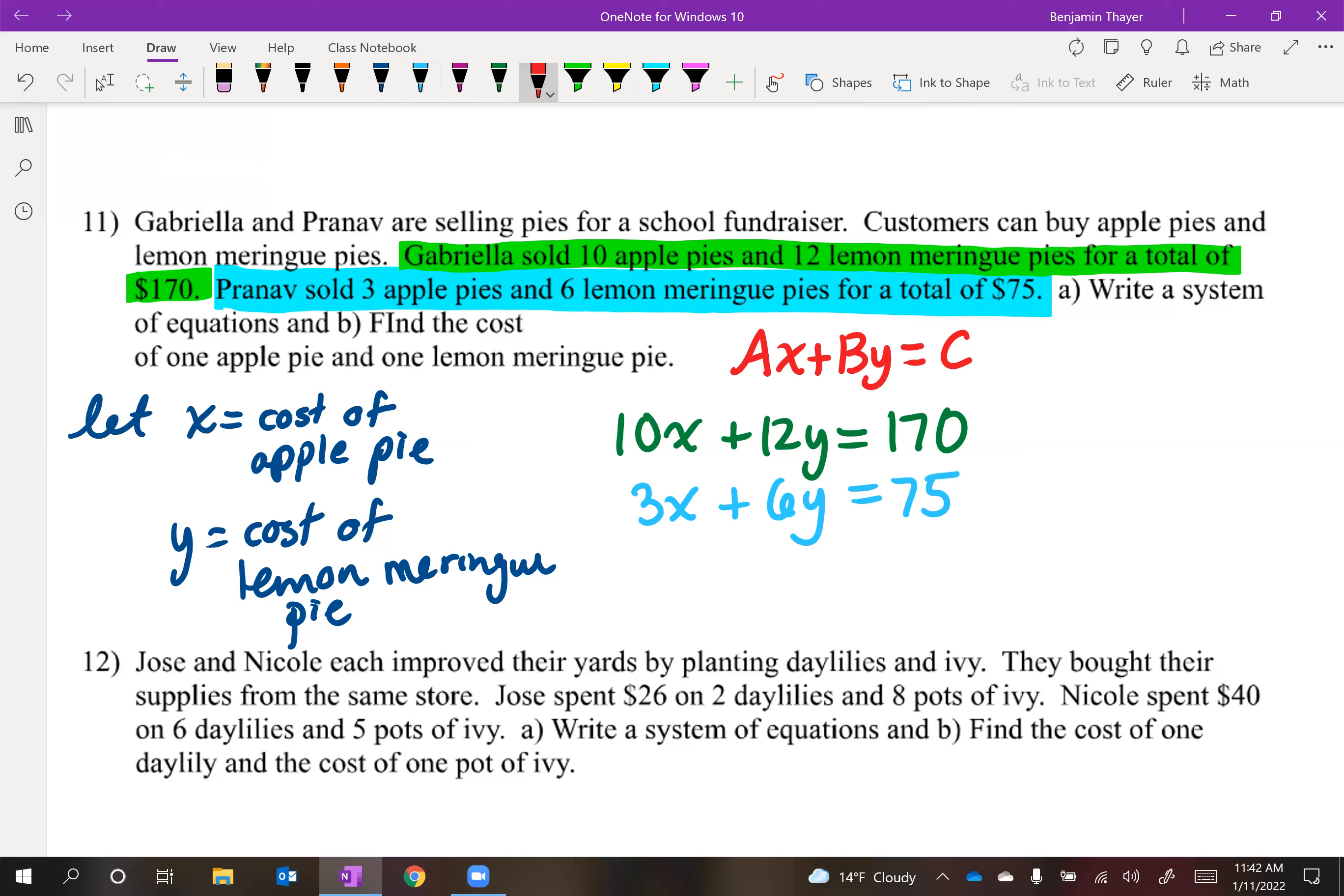So elimination would work best here. Let's eliminate the y variable by making it a negative 12y. So we multiply this equation by negative 2. That will create that negative 12y. So now you're ready to solve this and find the cost of apple pie and lemon meringue pie. So that's your hint for 11.